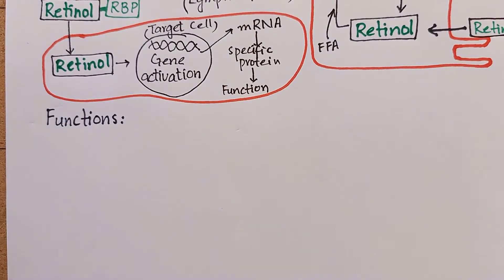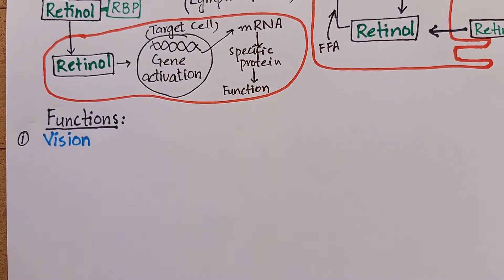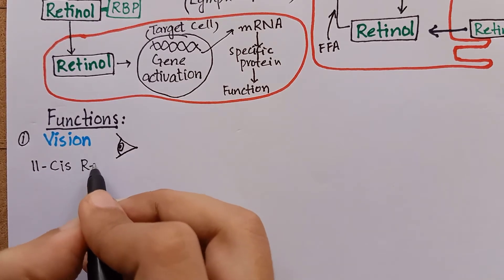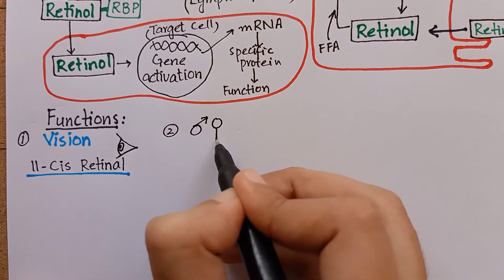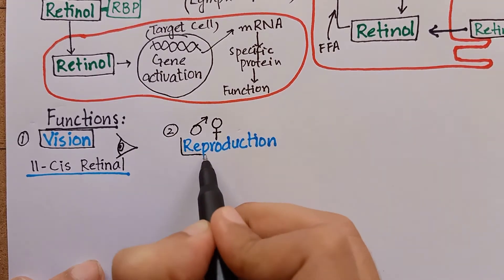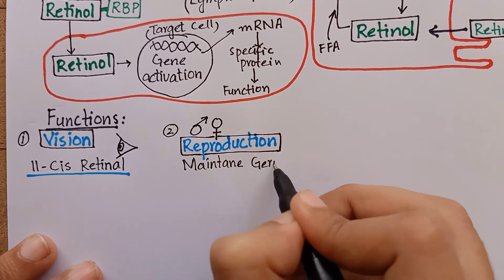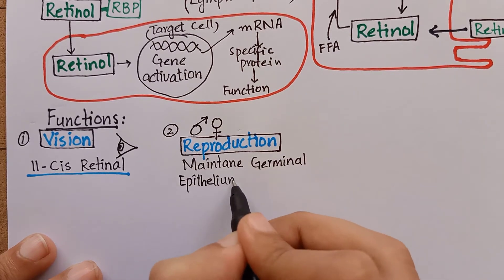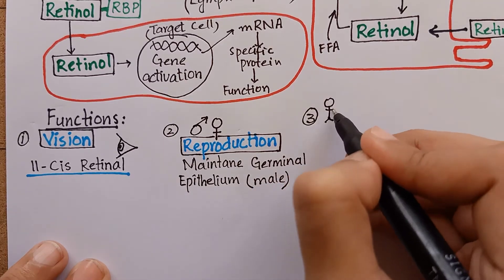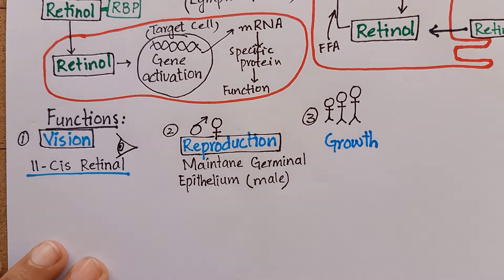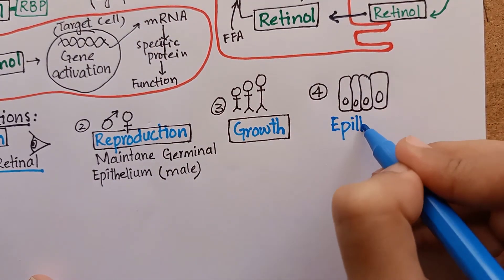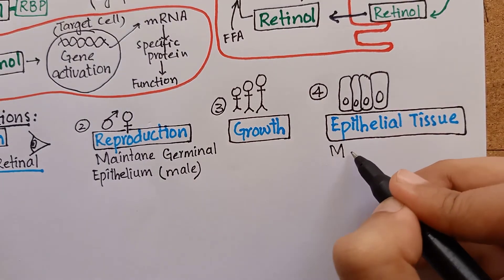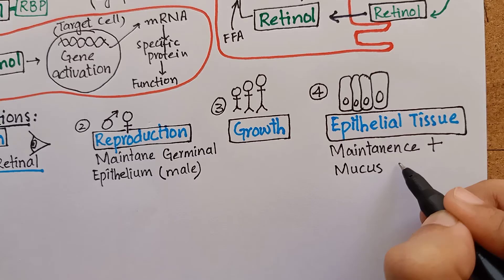The most important function of vitamin A is vision. For vision, the active component is 11-cis retinal, which is an aldehyde form of vitamin A. Vitamin A is also important in reproduction, as it is essential for the maintenance of germinal epithelium in males. It also promotes growth and bone development in children. Vitamin A is also essential for the maintenance and differentiation of epithelial tissues and for mucus secretion.